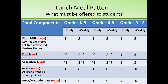For fruit, grades K through 5 and 6 through 8, you must offer students a half cup of fruit every single day, and two and a half cups over the course of the week. At the high school level, grades 9 through 12, you must offer one cup of fruit every single day and five cups over the course of the week. For vegetables, grades K through 8, a three-quarter cup of vegetable must be offered at a minimum every single day, and three and three-quarters cups over the course of the week. At grades 9 through 12, you must offer one cup of vegetable every single day and five cups over the course of the week.